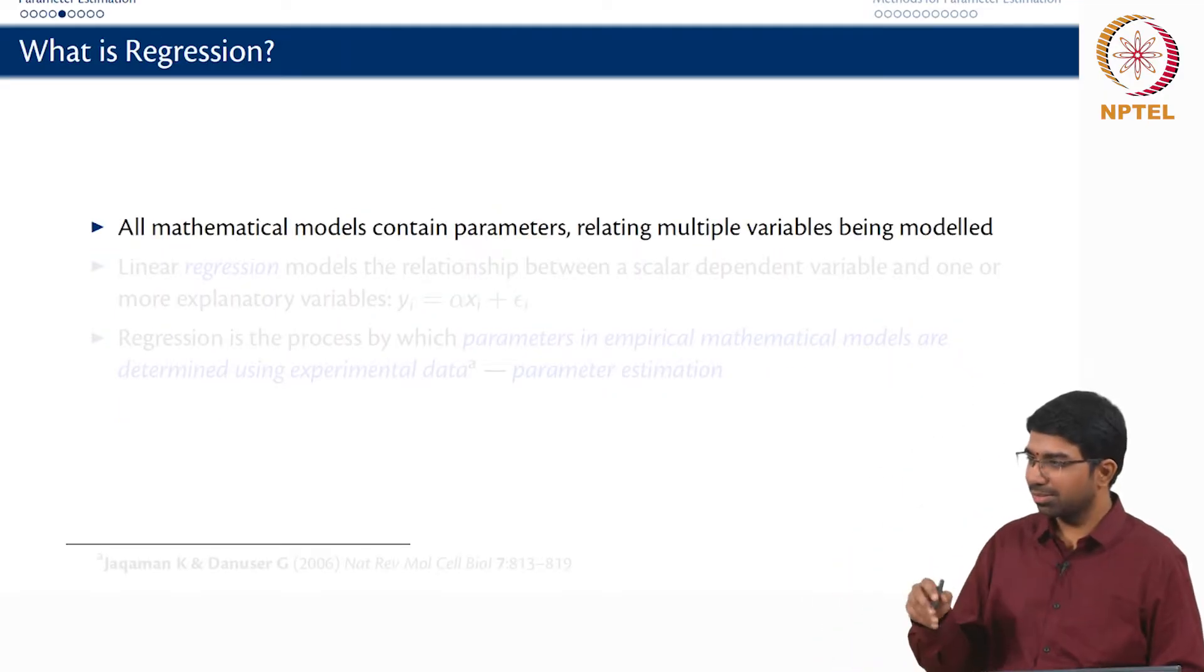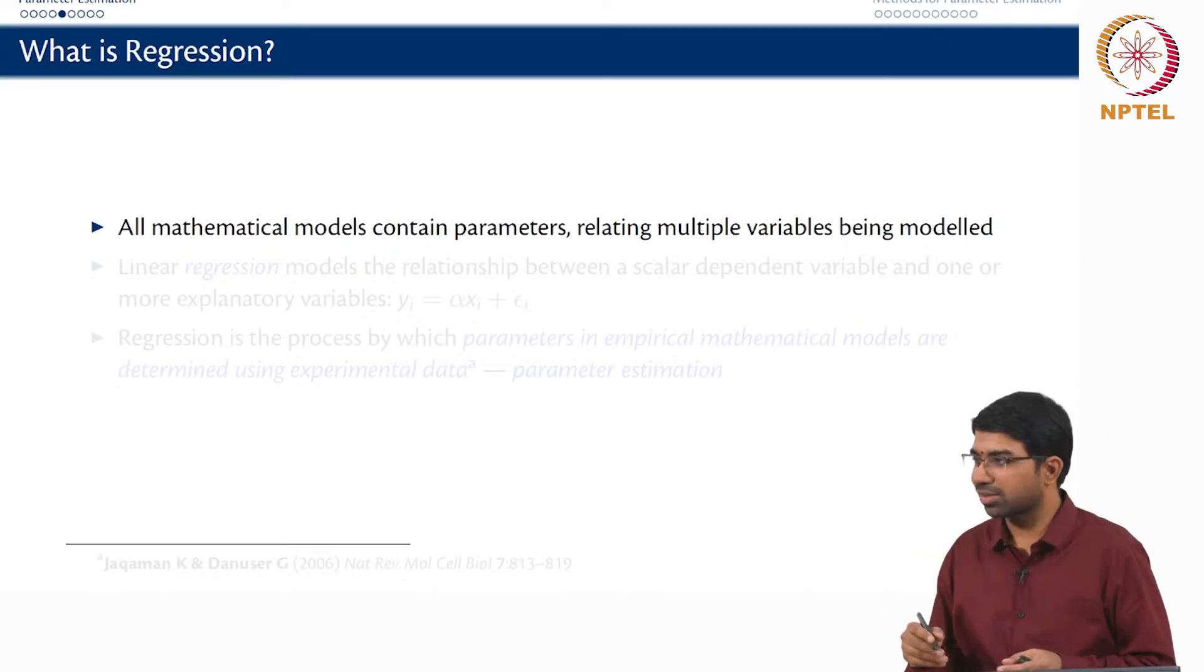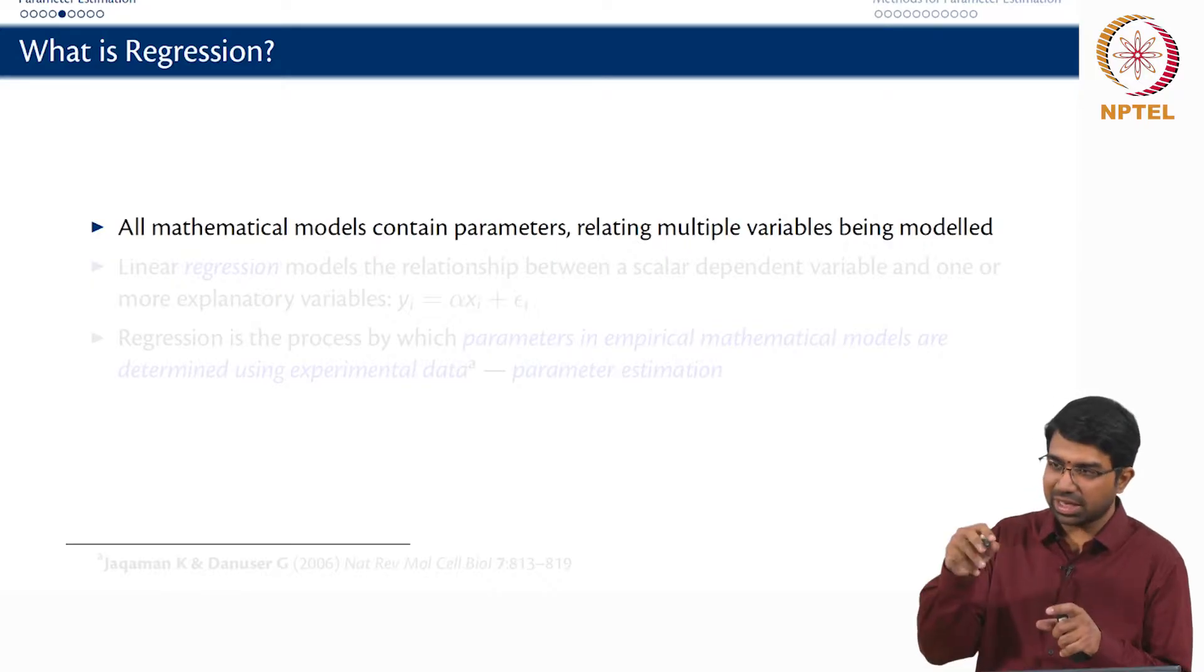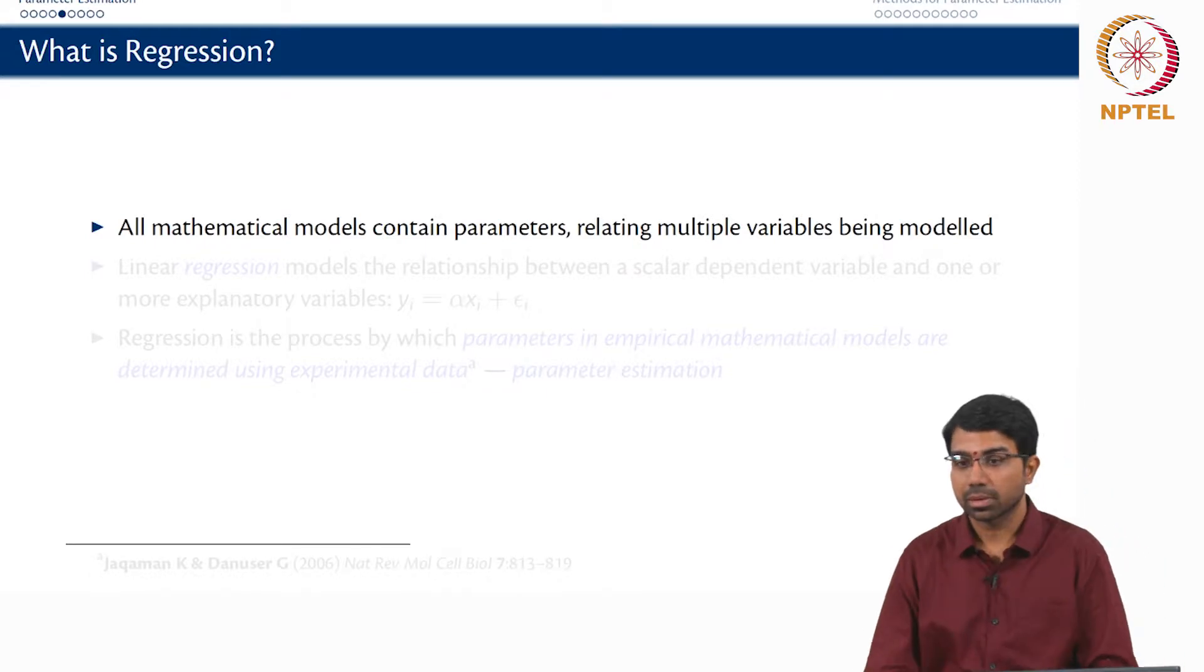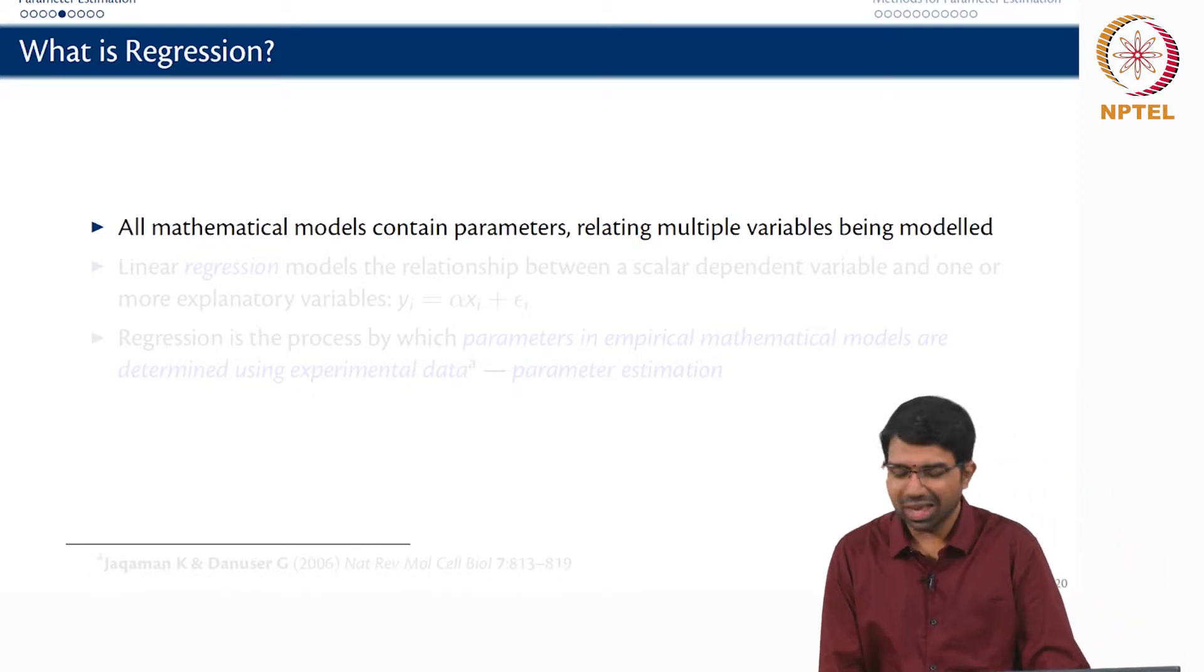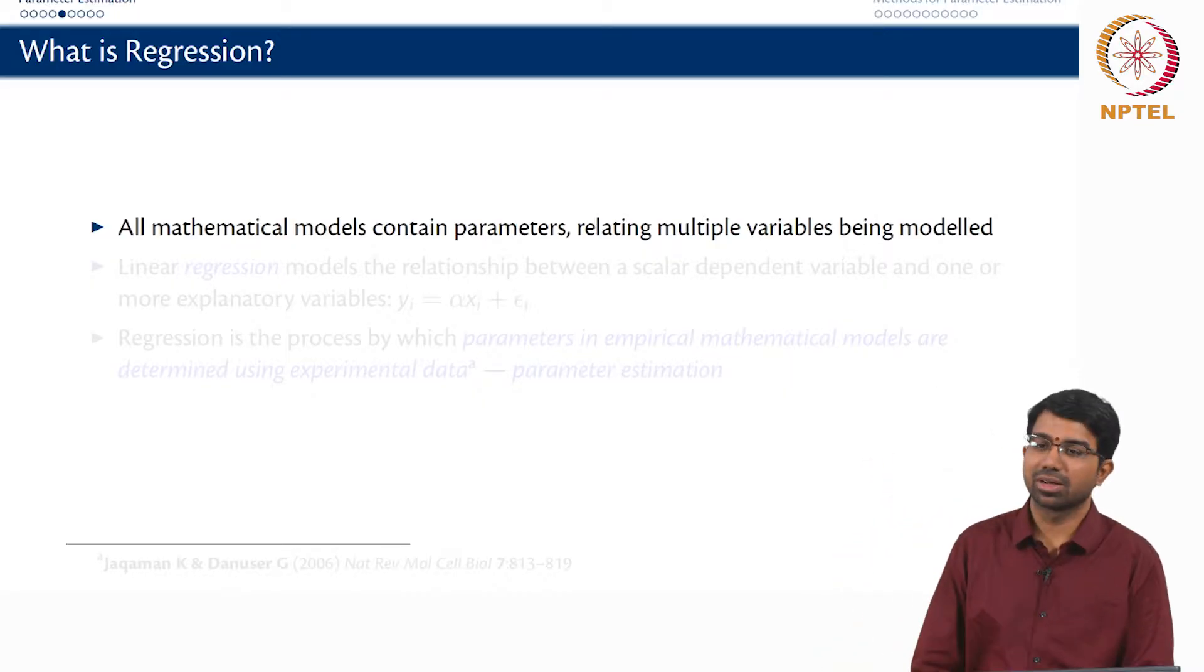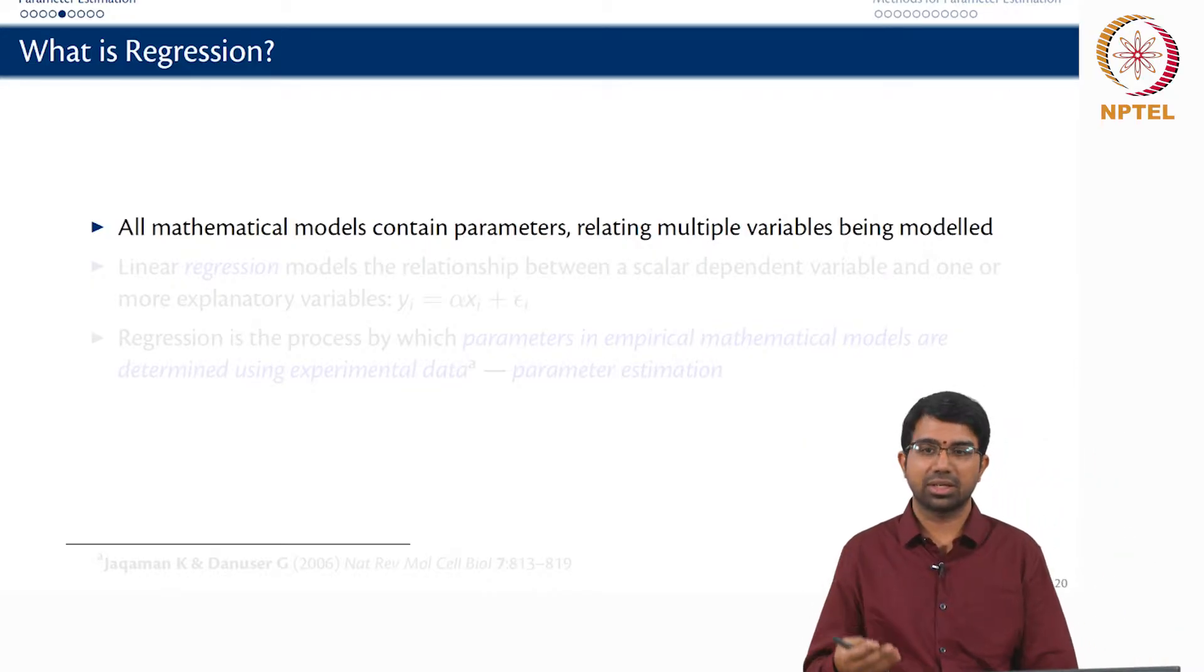Grid search is basically how you search for something that you have lost. You basically grid the place up and look at every section. So it is essentially searching in every place of the parameter space, every section of the parameter space. So you essentially divide the parameter space into grids and you sample uniformly across the grids. There is something called Latin hypercube sampling which does exactly that.